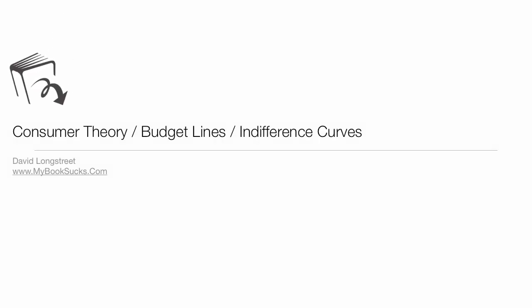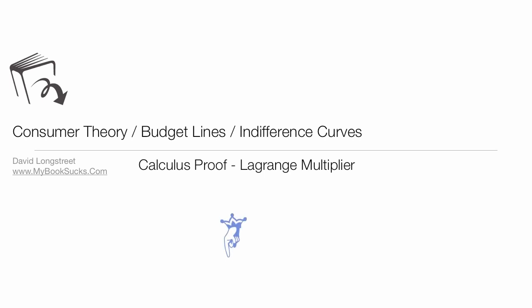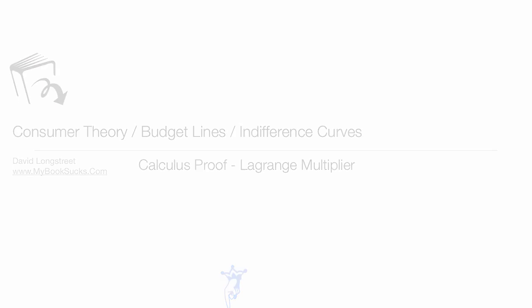In this tutorial, I'm going to show you the calculus proof of consumer theory, budget lines, and indifference curves. I'll be using the Lagrange multiplier — but in Texas we call it Lagrange, as in ZZ Top. You can find the entire playlist on consumer theory below.